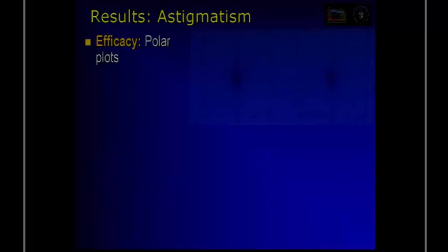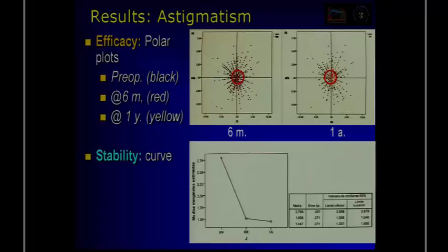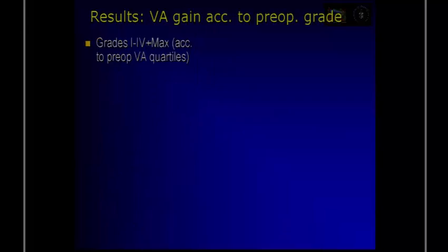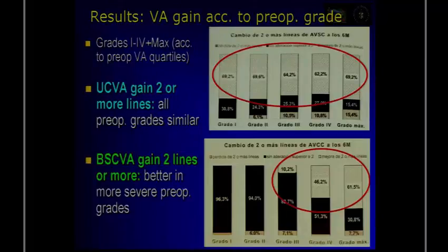In other analyses — astigmatism at six months and one year — you see the curve of stability in the graph at the bottom. Looking at the grades of keratoconus as a function of pre-op grade, there is a visual acuity gain of two or more lines. With correction, there is a gain of two lines in more severe cases. The gain is more marked in more severe cases, which is logical.